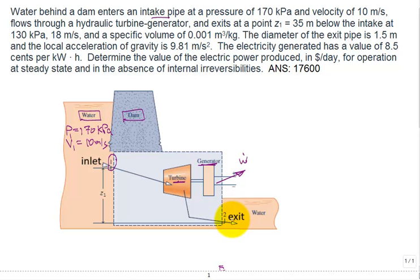It exits down here at state 2, and at the point it exits, Z1 is 35 meters below the intake. The most logical approach is to set the location Z2 to 0 as a datum point for the elevation, and then Z1 is 35 meters above the exit.